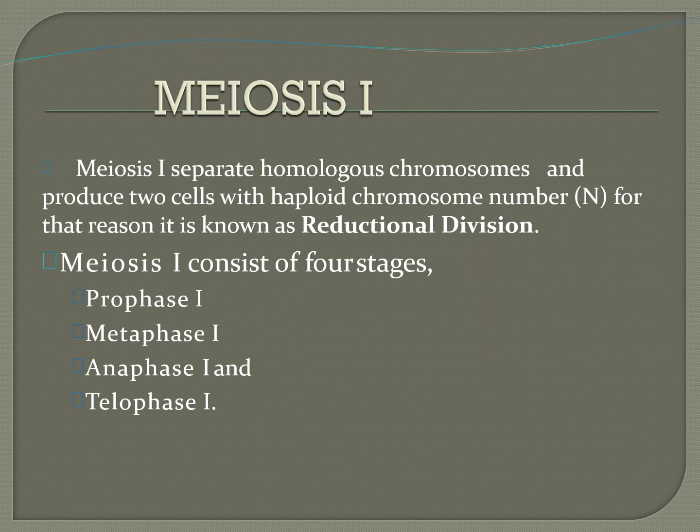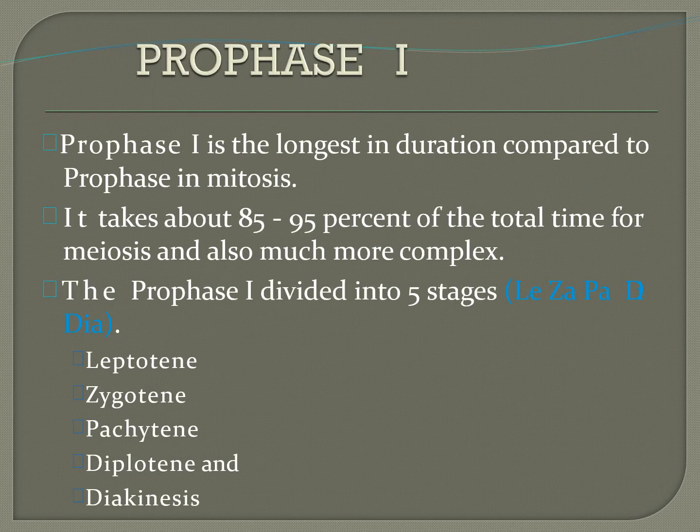Meiosis first is the stage where homologous chromosomes separate, and at the end of meiosis first, two daughter cells are produced having haploid number of chromosomes — that is why meiosis is called reduction division. Meiosis first consists of four stages: prophase first, metaphase first, anaphase first, and telophase first. Prophase first is the longest in duration compared to prophase in mitosis, taking about 85 to 95 percent of the total time for meiosis, and is also much more complicated and complex. It is divided into five sub-stages: leptotene, zygotene, pachytene, diplotene, and diakinesis.